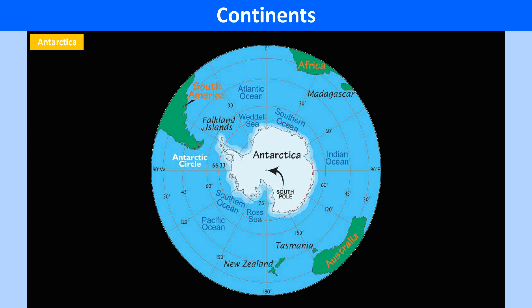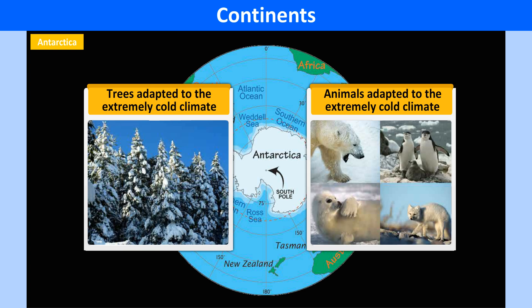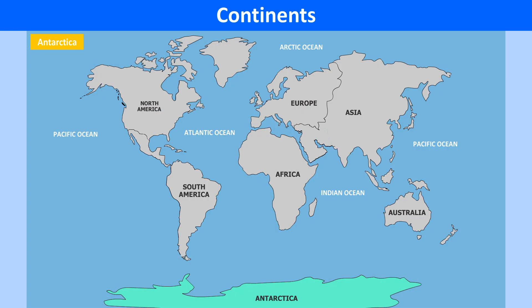Due to this, no one really knows what lies underneath the thick sheet of ice. The only forms of life are land plants and animals that have adapted to the extremely cold climate of this continent. There are no permanent human settlements in Antarctica. It lies completely in the southern hemisphere.